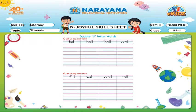T A double L — tall. B A double L — ball. B E double L — bell. W E double L — well. F I double L — fill.